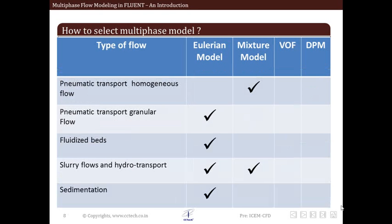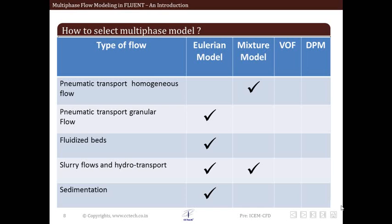Next type is pneumatic transport, in which homogeneous flow exists. For this we use the mixture model, whereas for pneumatic transport granular flows, we use the Eulerian model.